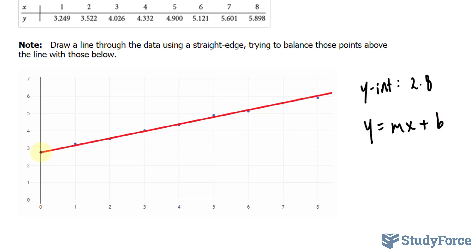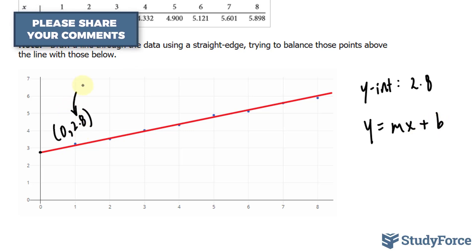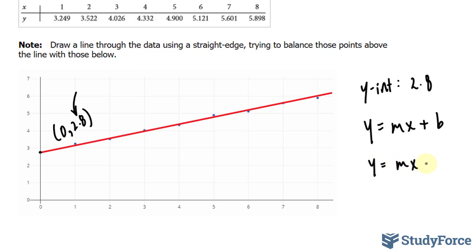So this point right here we said is 0 and 2.8. Therefore, b is equal to the y-coordinate of this point of 2.8. Let me fill that in and we'll find the slope next.